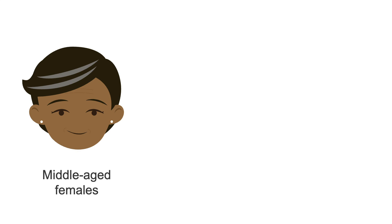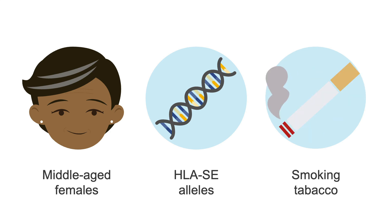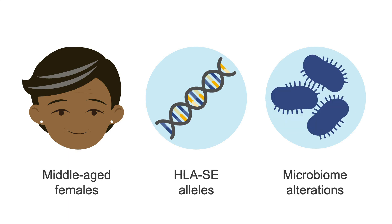However, we know that an interaction exists between genes and environment, because both being a carrier of human leukocyte antigen shared epitope, or HLASE alleles, and smoking tobacco are strongly associated with developing rheumatoid arthritis. Other environmental associations include alterations in the microbiomes of the mouth, gut, and lung.